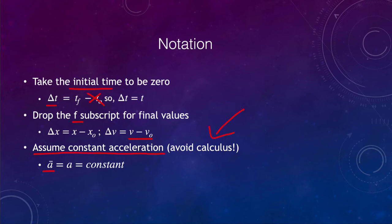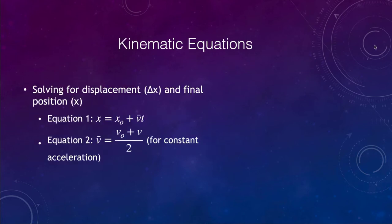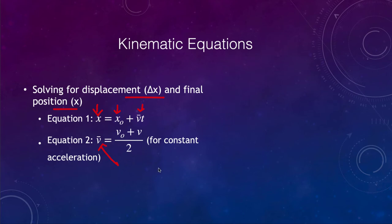With constant acceleration, the average velocity — denoted with a bar over it — equals the acceleration, which is constant. Let's look at the kinematic equations we'll be using and do a few example problems. The first set of equations involve solving for displacement and final position. The first equation says the final position equals the initial position plus the average velocity times the time, where average velocity is given by the average of the initial and final velocities. This works for constant acceleration; it gets more complex otherwise. These are the first two kinematic equations.